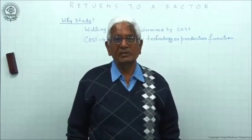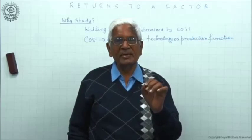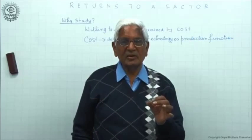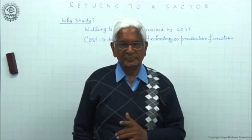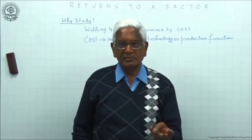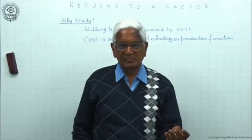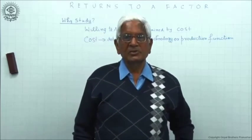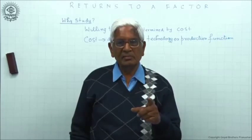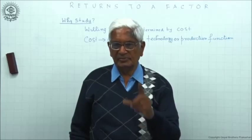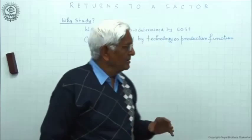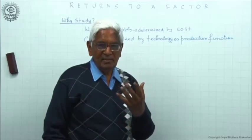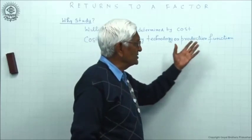What is the meaning of technology? Technology simply means method of production. Method of production means the combination of inputs — how much labor, how much capital, how much raw material, and so on. The moment you change this combination, technology changes. So technology here should be taken to mean method of production. The technical name for this technology in economics is production function.